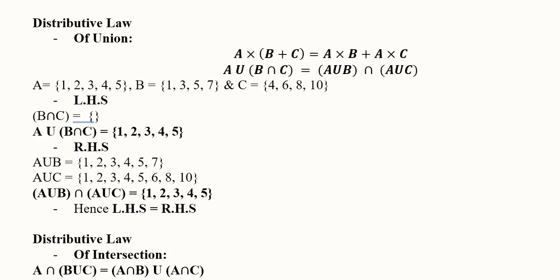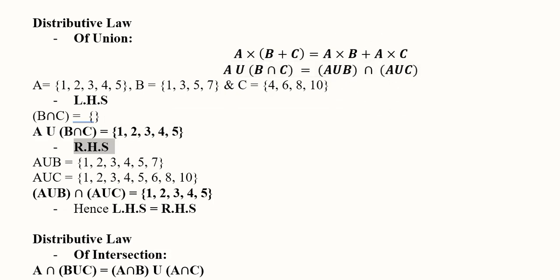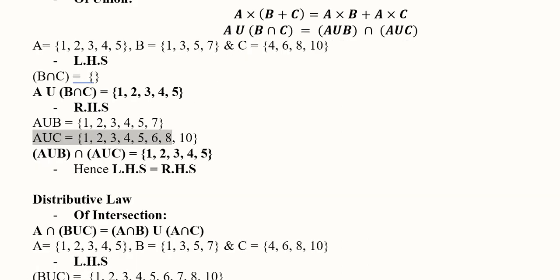Following this, we find B∩C first, which is an empty set, then take the union with A — giving us A as the answer. For the right-hand side we need A∪B and A∪C. A∪B is found here and A∪C is found here, and then their intersection is taken. Comparing the left-hand side with the right-hand side, they are equal, verifying the distributive law of union over intersection.